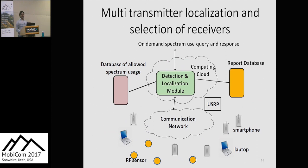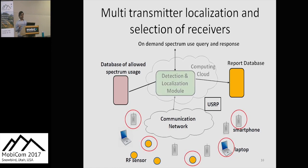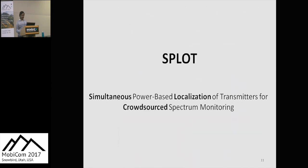There are two important components in this idea. First is having an algorithm that can detect an unknown number of simultaneously active transmitters and localize them. The second part is selecting a set of receivers from the available ones for the purpose of sensing the RF medium. This is where our work, SPLOT, comes into picture. SPLOT can perform both jobs — multi-source localization and receiver selection — in a very efficient way.